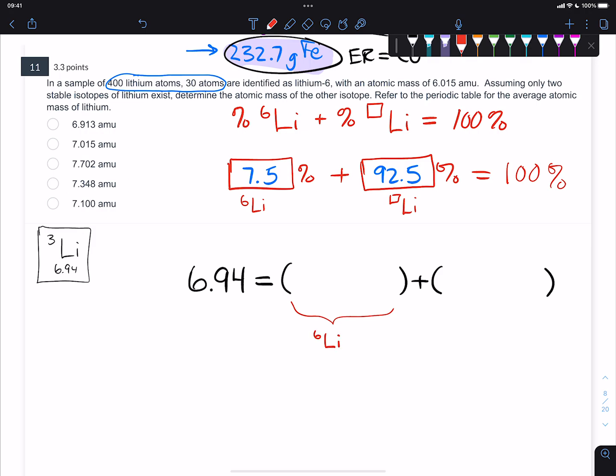And here's the thing about percent abundance problems: we're dealing with two different isotopes here. So this first thing is going to belong to the lithium-6 isotope, and the second thing is going to belong to the other isotope. That just represents the two isotopes of lithium. What information do we know?